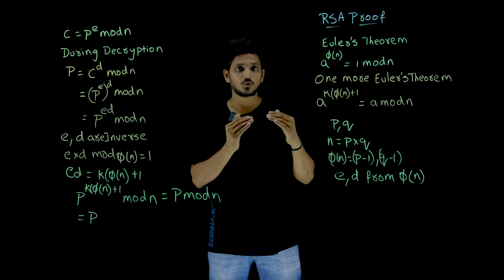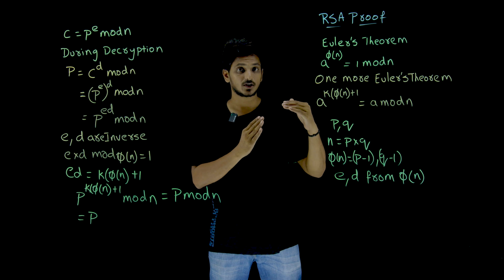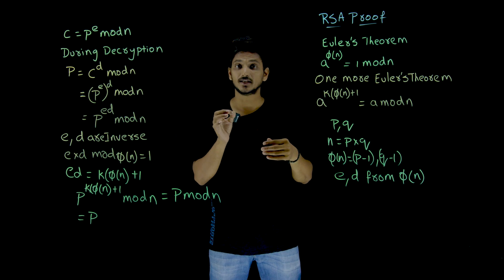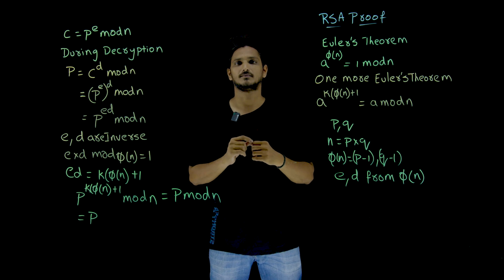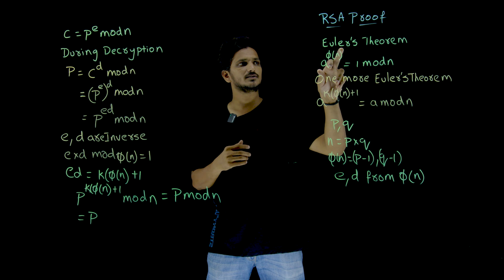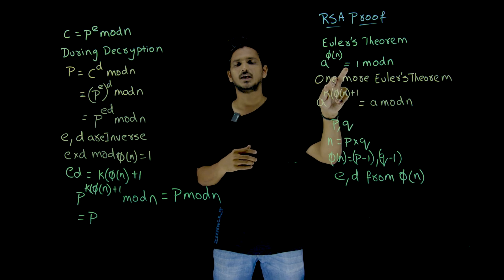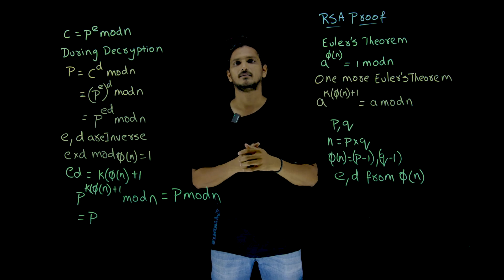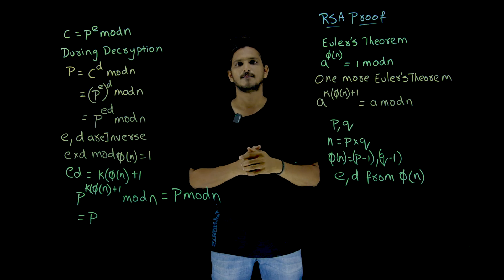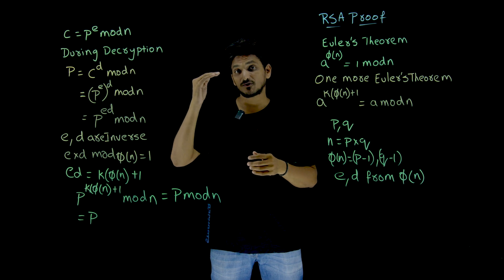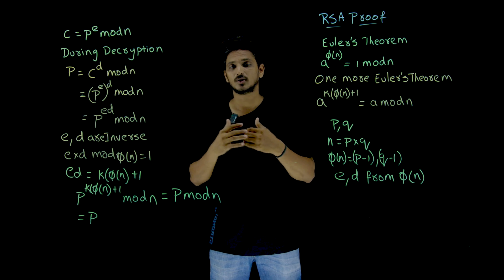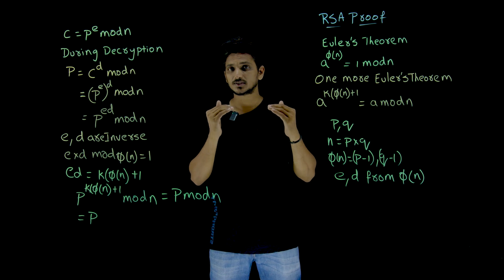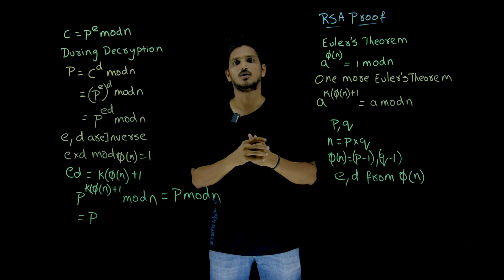Before we move on to the mathematical proof, let's try to refresh the concept of Euler's theorem, which we already discussed mathematically in our Discrete Mathematics Playlist. Euler's theorem says: a to the power phi of n is equal to 1 mod n. There is also a second version of Euler's theorem, which we are going to use in our RSA algorithm.